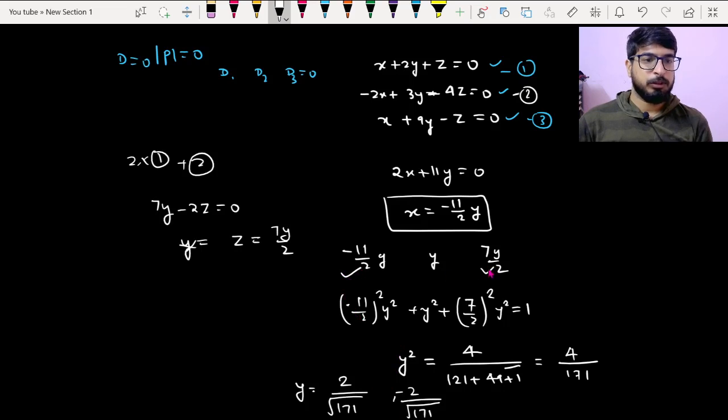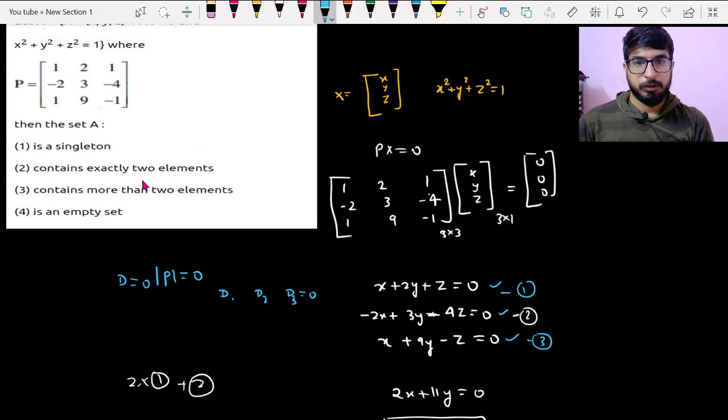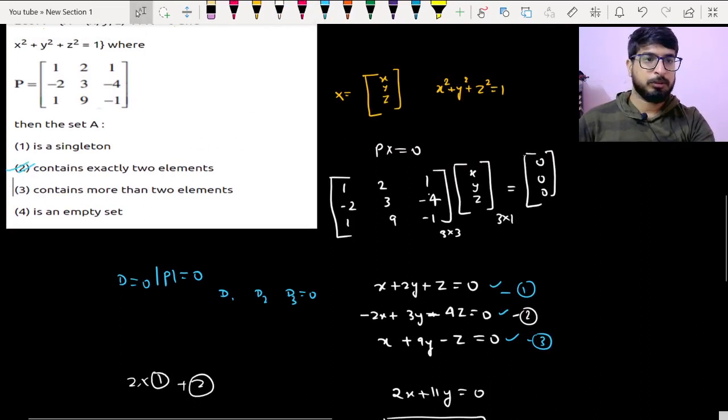So I'm getting two values of y. Similarly I'll get two values of x and two values of z. So we'll get two solutions of x, y, and z. So there will be exactly two solutions, option 2 is correct.